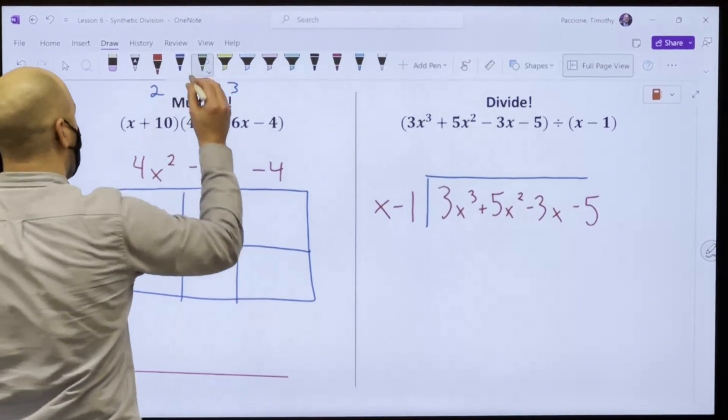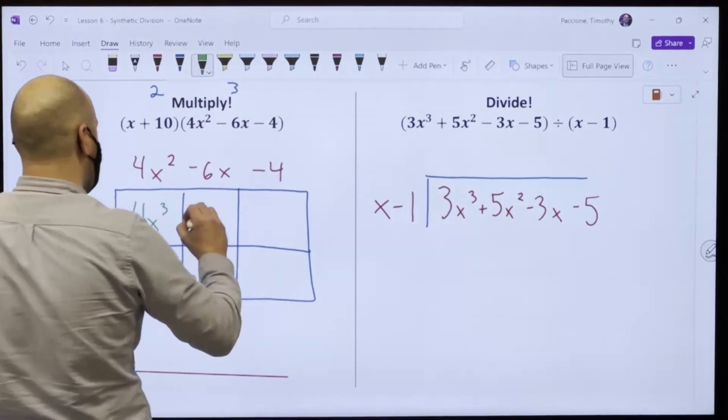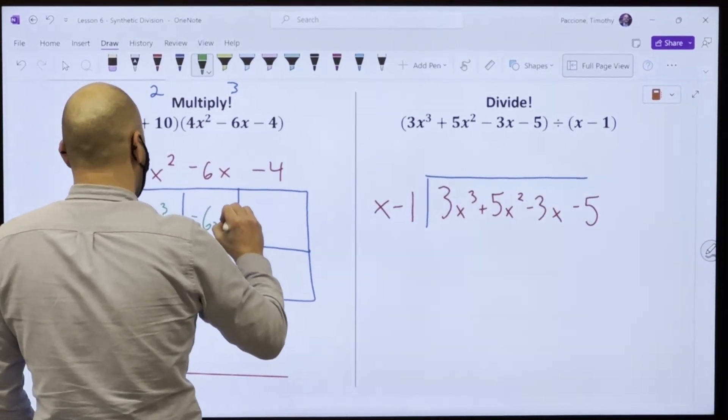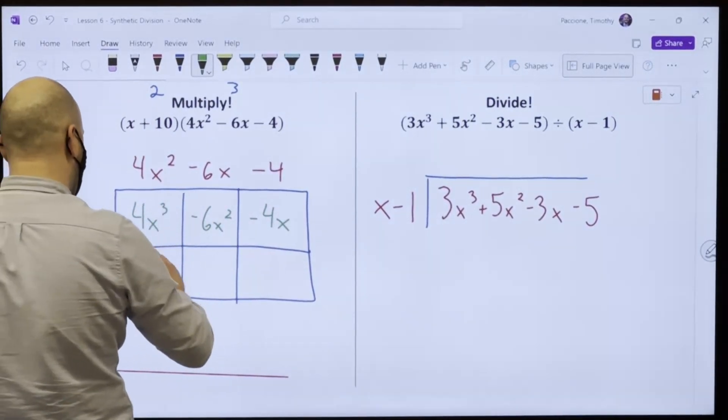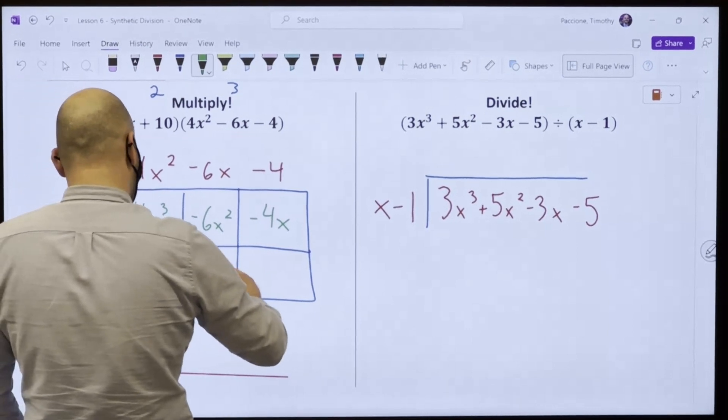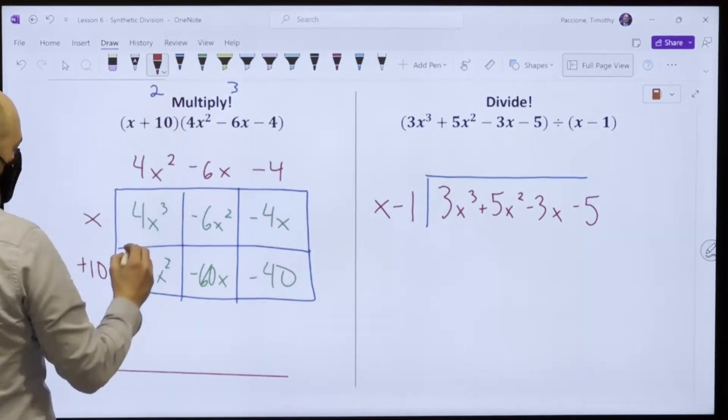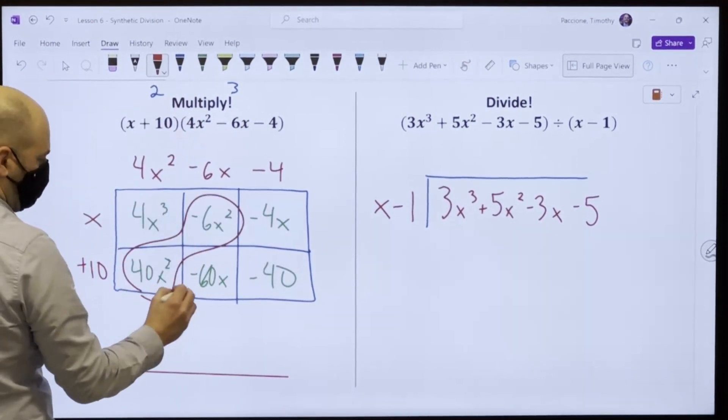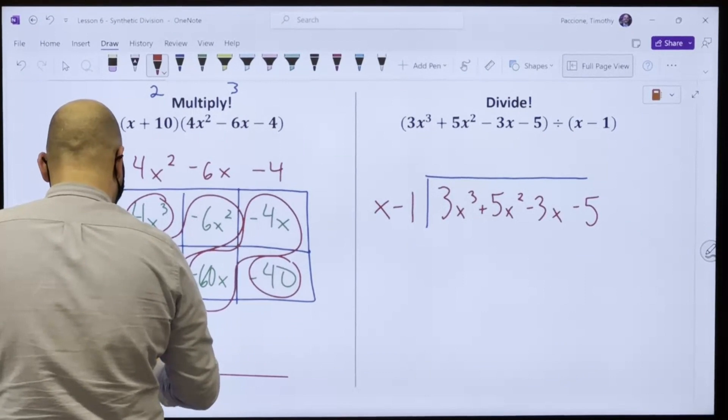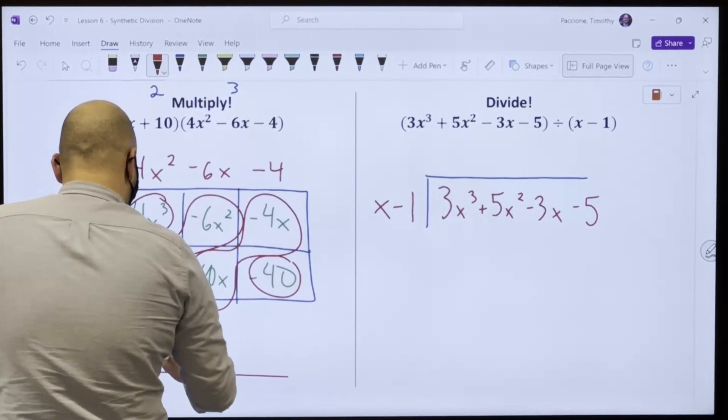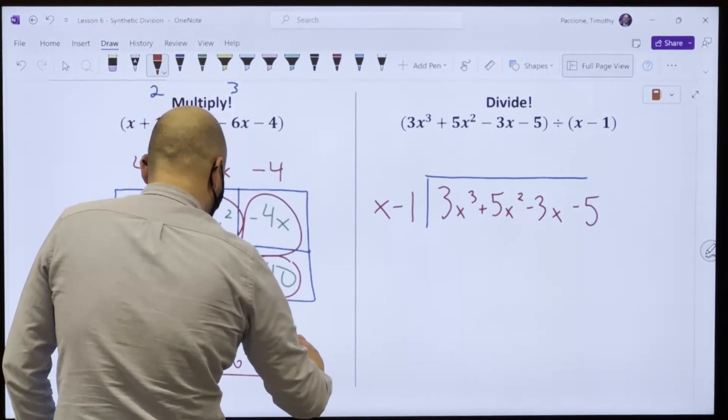Alright, so here we go. We do every box, right? So this x times 4x squared, 4x to the third. x times minus 6 is negative 6x squared. x times minus 4 is minus 4x. 4x squared times 10, 40x squared. This is minus 60x. This is minus 40.